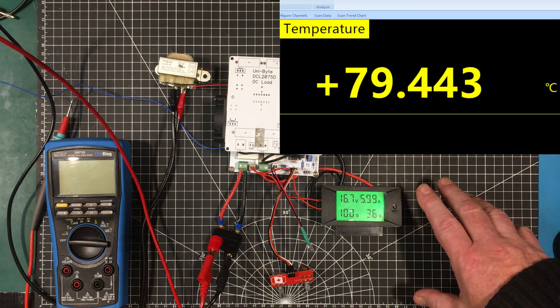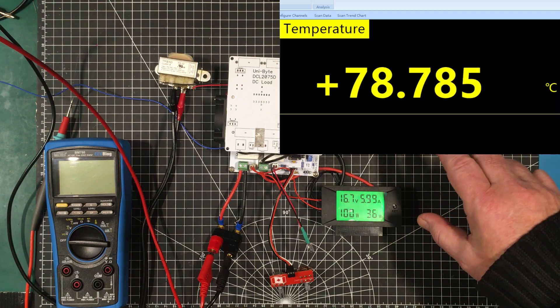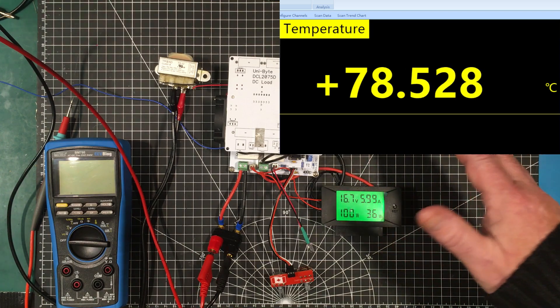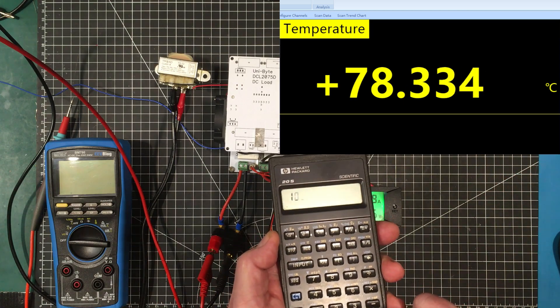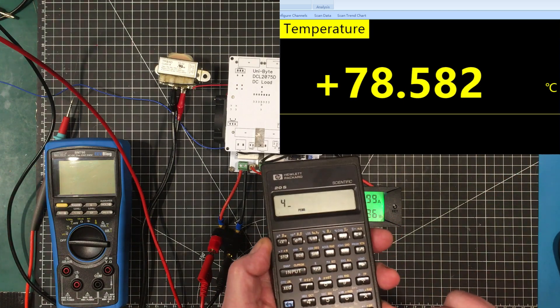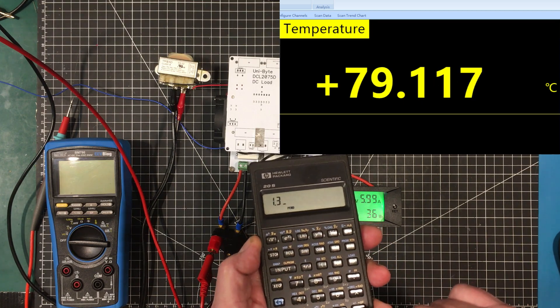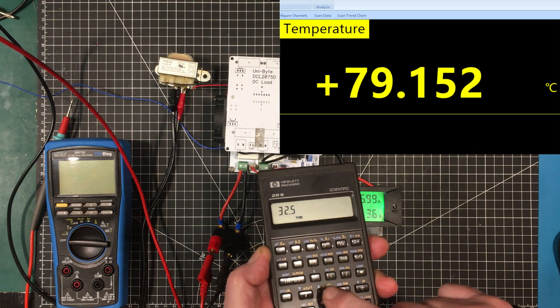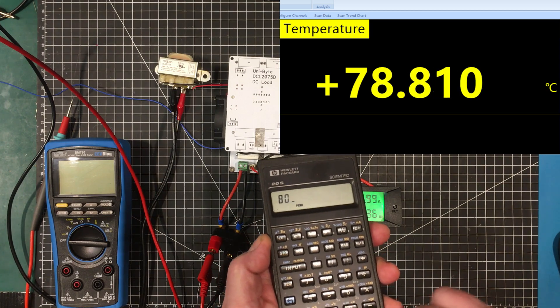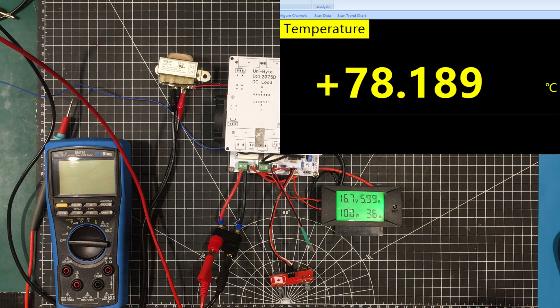We're at 100 watts now and the fan is going up and down and we seem to be cycling around 80 degrees C. Let's do the calculation: 100 divided by 4 times 1.3 plus 80 degrees equals 112.5. We've got lots of headroom. So we've met our design goal of 100 watts.